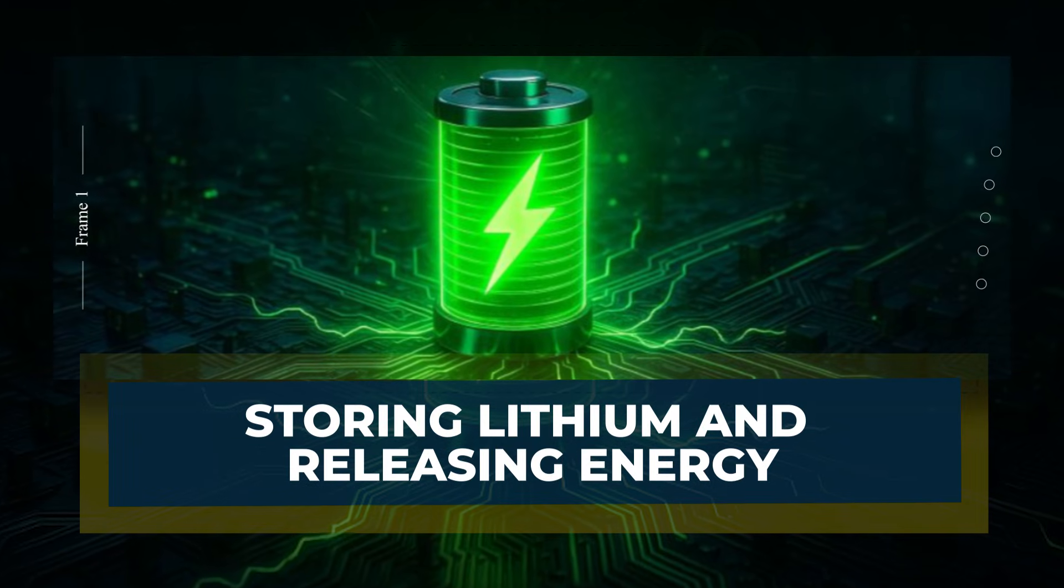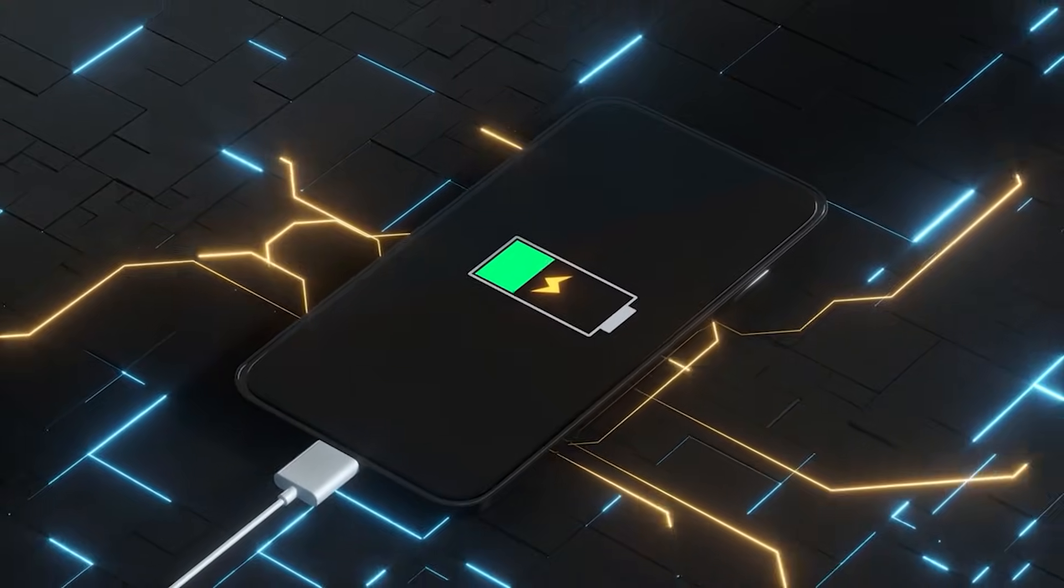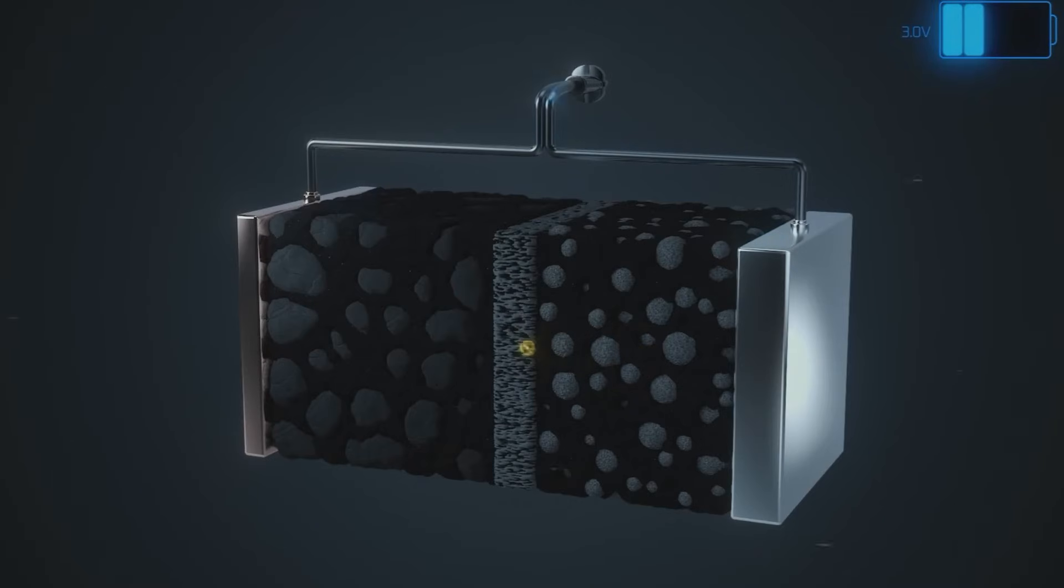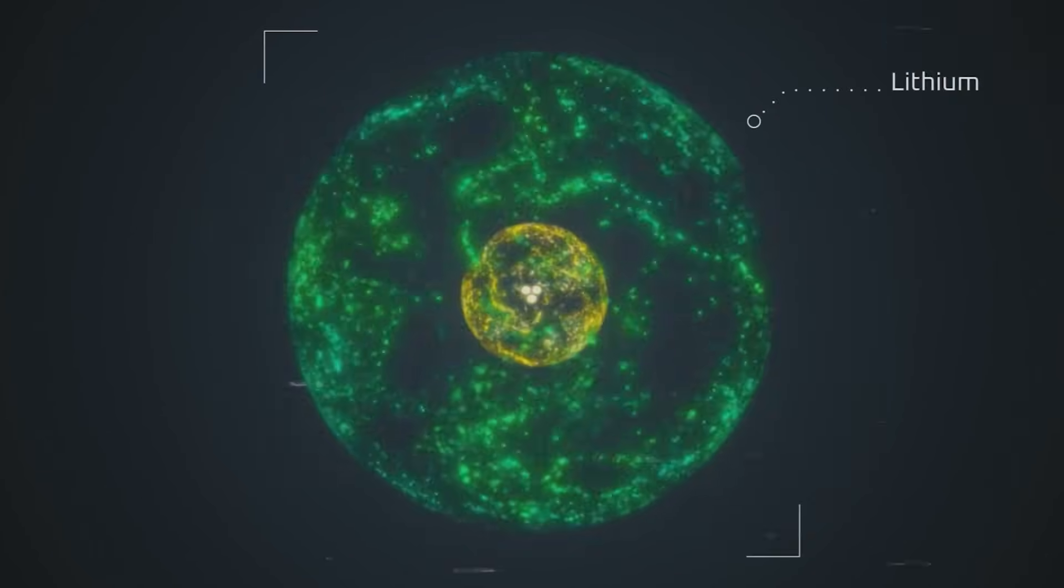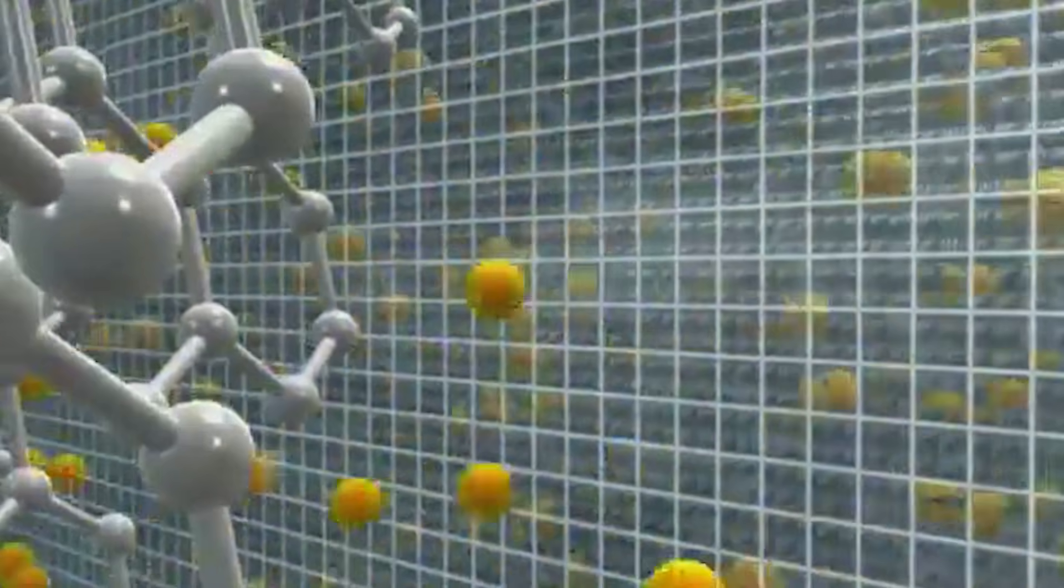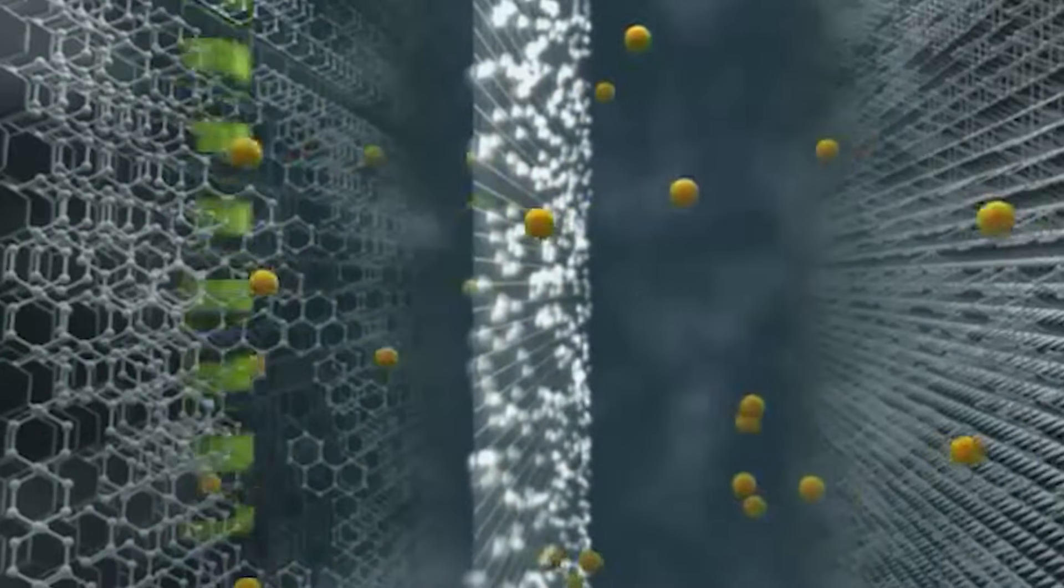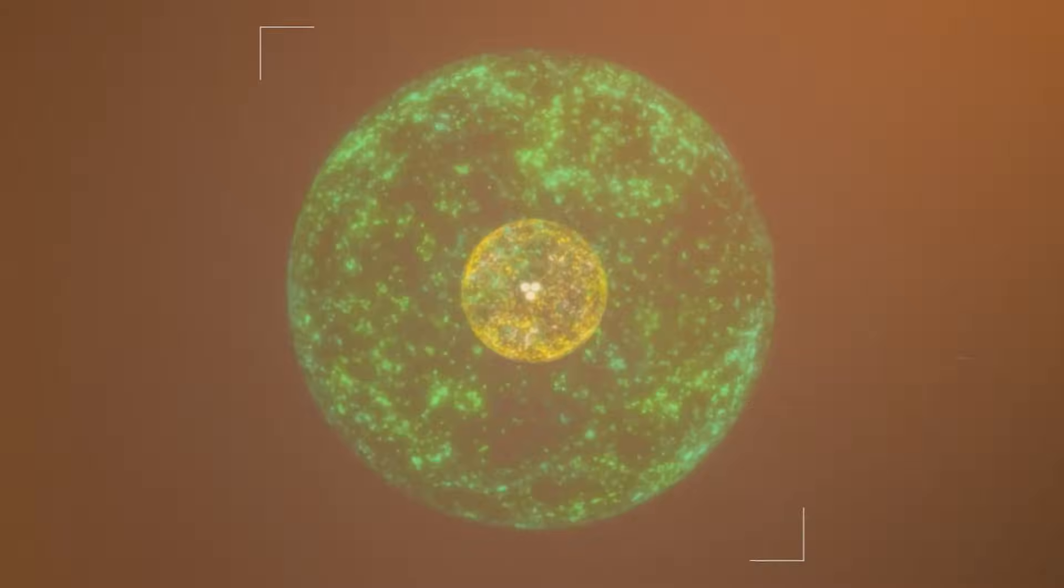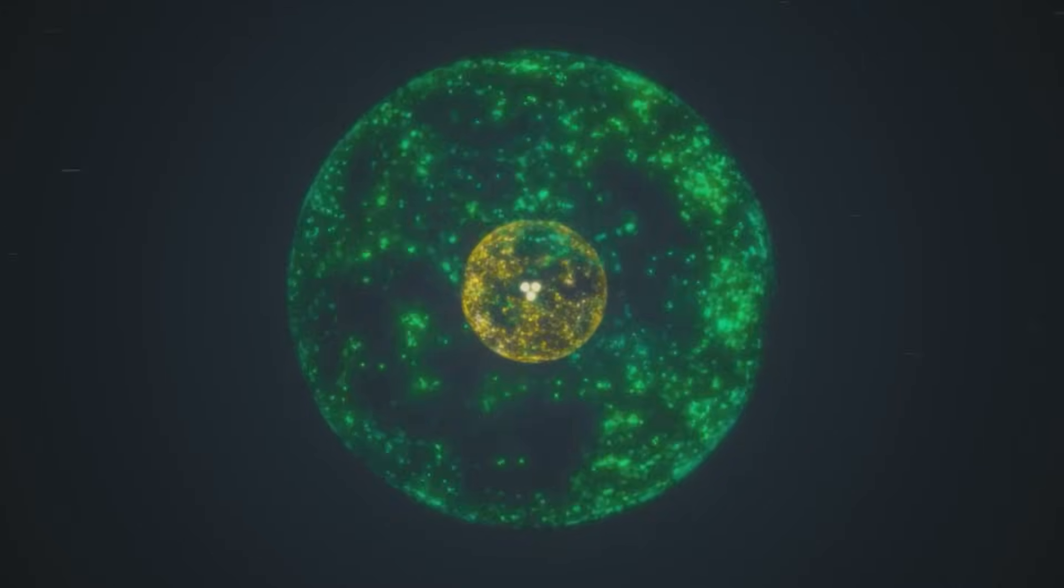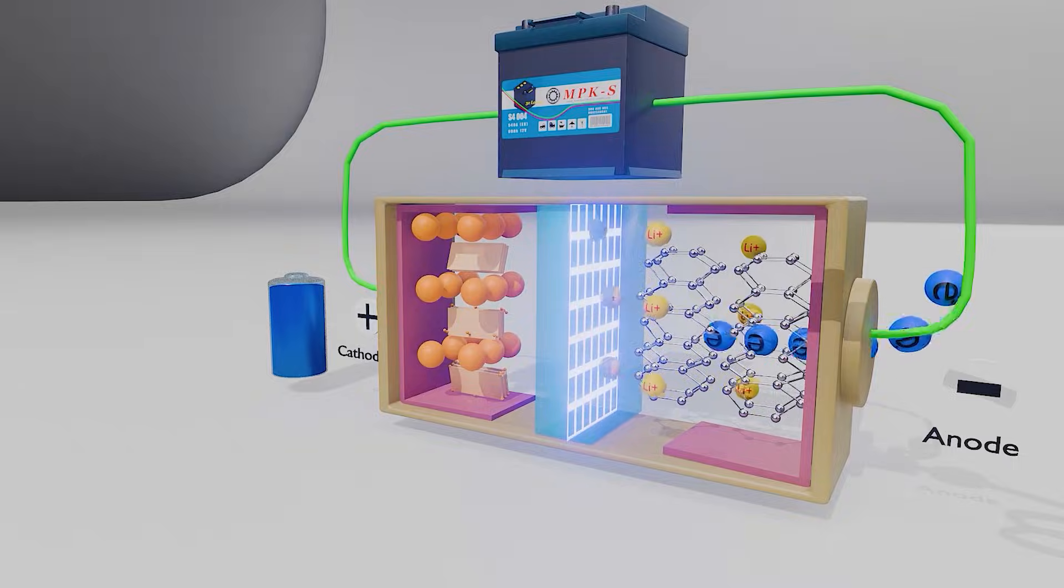Storing lithium and releasing energy: Once the SEI exists, charging becomes more orderly. An arriving electron at the anode can pair with a lithium ion to make a neutral lithium atom. That lithium atom doesn't become part of the graphite crystal. Instead, it slips between graphene layers. This is intercalation—like sliding cards into a deck without tearing the deck apart. The most stable packing is about one lithium atom for every six carbon atoms, so the anode fills in a predictable way.